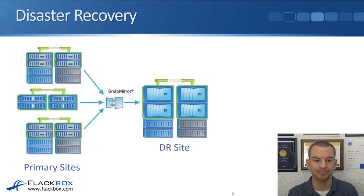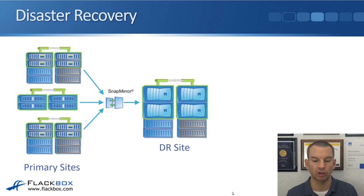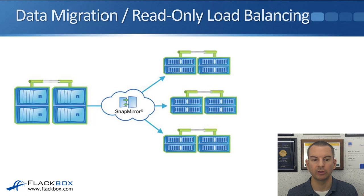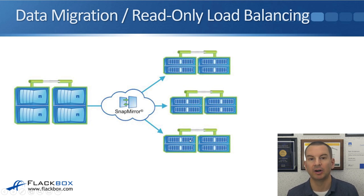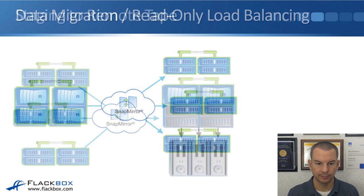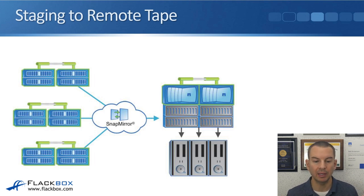Disaster recovery is the most common use case for SnapMirror DP mirrors. In an example, you might have primary sites in New York and London replicating to Sydney as a disaster recovery site. For data migration or read-only load balancing, a source site in New York can replicate data to sites in London, Sydney, and other locations. You can also do staging to remote tape, where main sites replicate volumes into a centralized cluster that then backs up to tape.